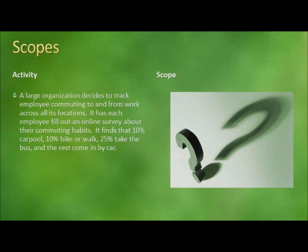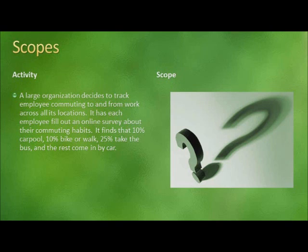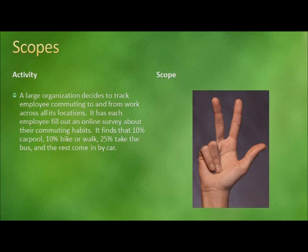In the next example, a large organization decides to track employee commuting to and from work across all its locations. It has each employee fill out an online survey about their commuting habits. It finds that 10% carpool, 10% bike or walk, 25% take the bus, and the rest come in by car. These are examples of scope 3 emissions. The assets are not owned by the company, but they impact the organization.